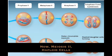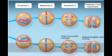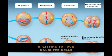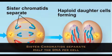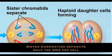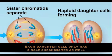Now meiosis II — haploid cells splitting into four daughter cells. Sister chromatids separate, half the DNA per cell. Each daughter cell only has single chromosomes as well.